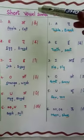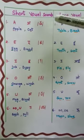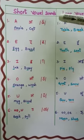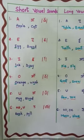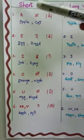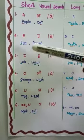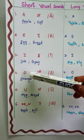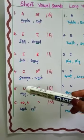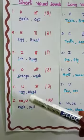First one: short vowel sounds. For short vowel sounds, the letters are A, E, I, O, U, and U.